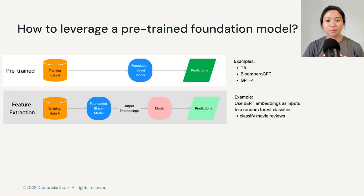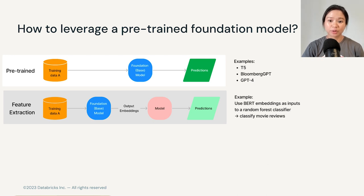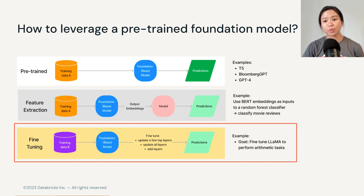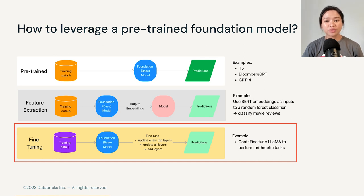The second way is to use the output of these foundation models as a feature. In this instance, we can use the output embeddings from the base model and feed that into another machine learning model to generate predictions. This is a very common use case of BERT embeddings. The third way, which is what we'll focus on in this module, is fine-tuning, where we may update only a few top layers of the base model, update all layers, or add some layers before we use the model to generate our desired predictions.